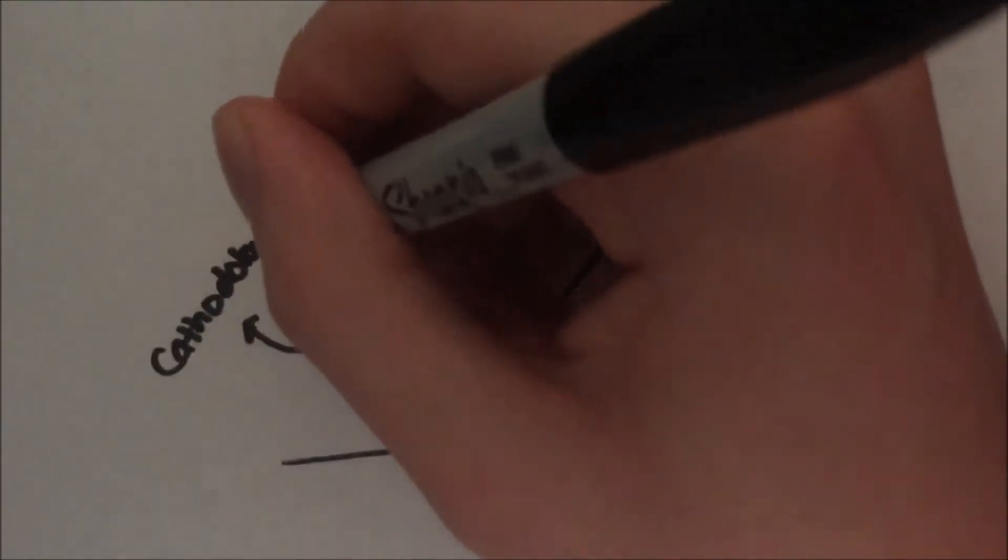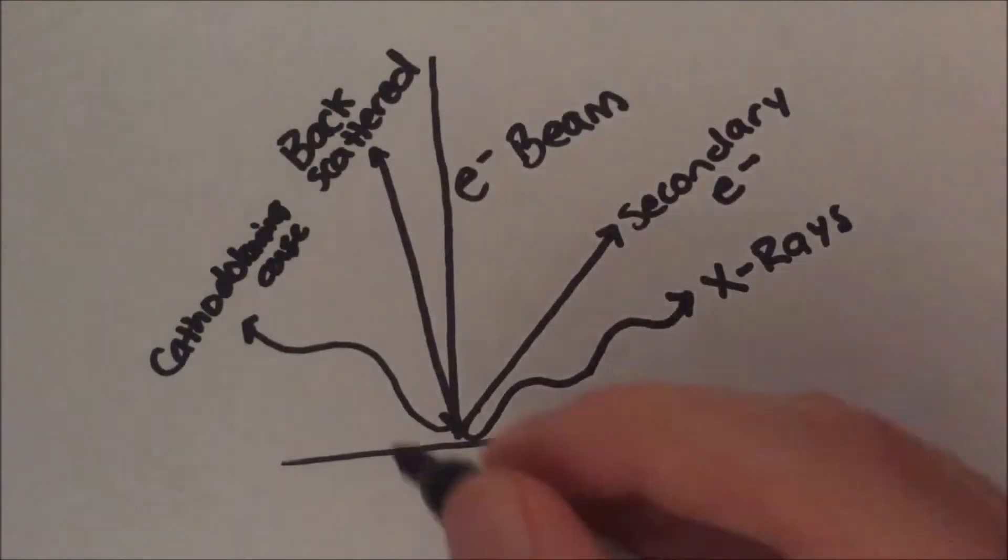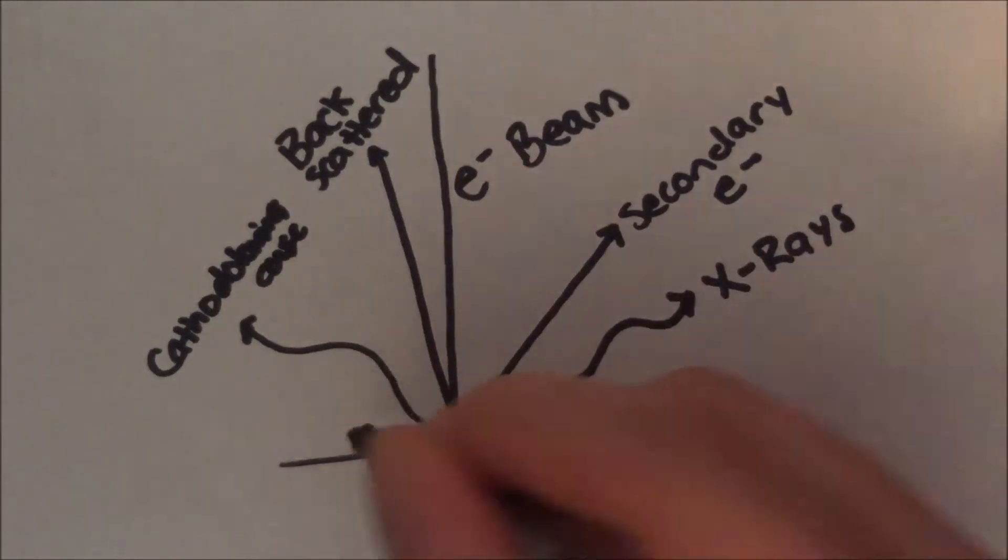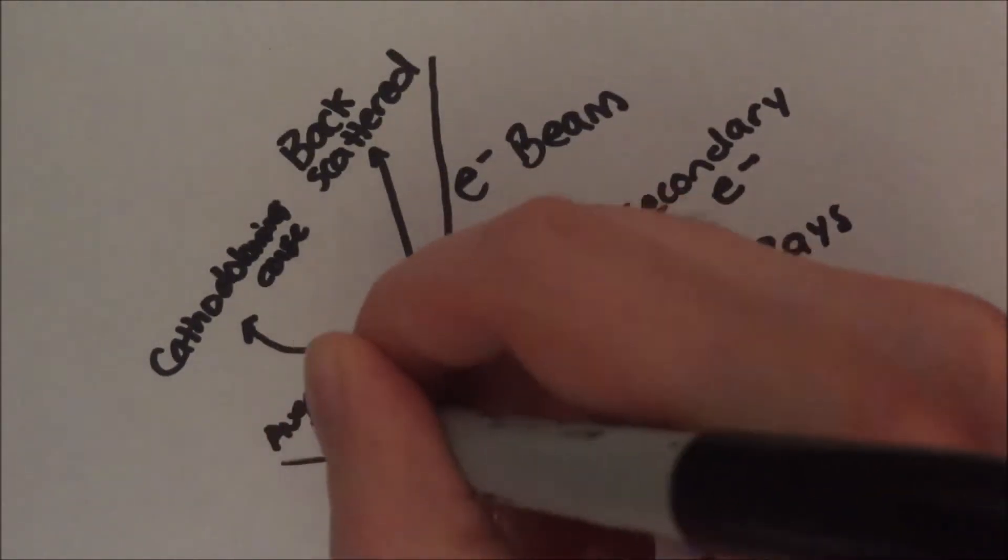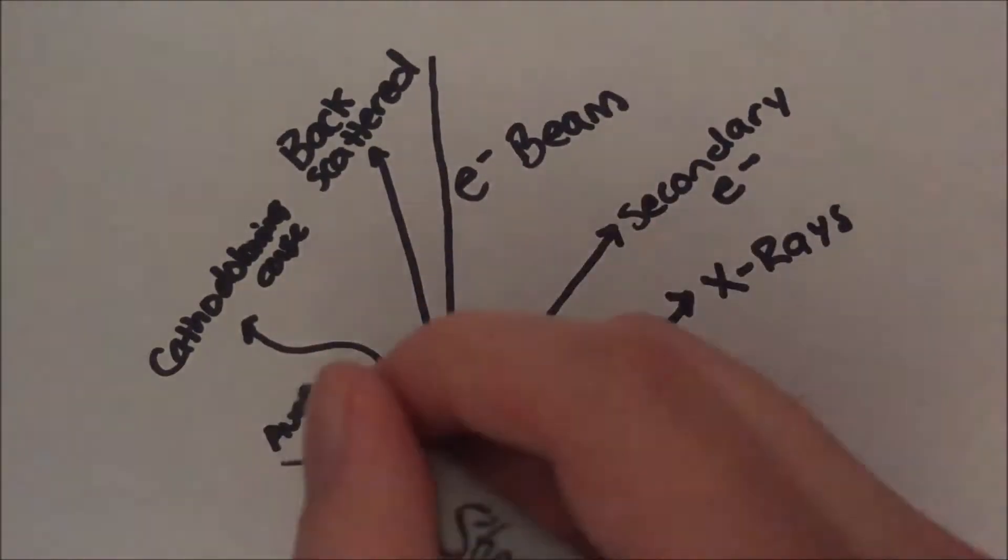A small portion of sample electrons at the very surface of the sample can be ejected with a relatively low energy. These are called Auger electrons and are the primary focus of scanning Auger microscopy.